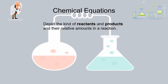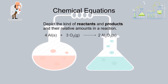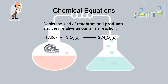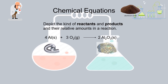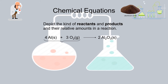Chemical equations depict the kind of reactants and products and their relative amounts in a reaction. Here is a simple example: aluminium plus oxygen gives Al₂O₃, that is aluminium oxide. Aluminium and oxygen are the reactants combining together and reacting to give a product. Aluminium oxide is the new product which has been formed from the reactants.